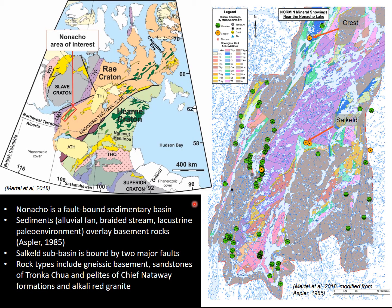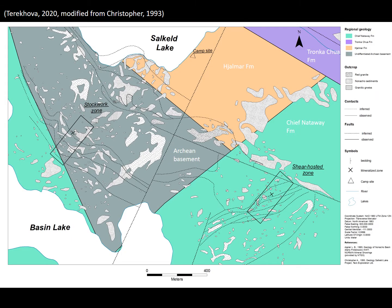To talk about the geologic setting: Nonacho is a fault-bound sedimentary basin, first mapped by Aspler in 1985. He determined that the paleoenvironments were consistent with alluvial fan, braided stream, and lacustrine settings. Sediments of the Nonacho overlay basement rocks. Salkil Lake, which is the study area, is a sub-basin bound by two major faults. Rock types include gneissic basement, sandstones of the Tronka Chua, pelites of the Cheapnattaway Formation, and alkali rag granite. This map shows the outcrop scale of the study area, first mapped by Christopher in 1993. During the field season of 2019, we visited the outcrops and trenches and investigated the main lithologies and host rocks.